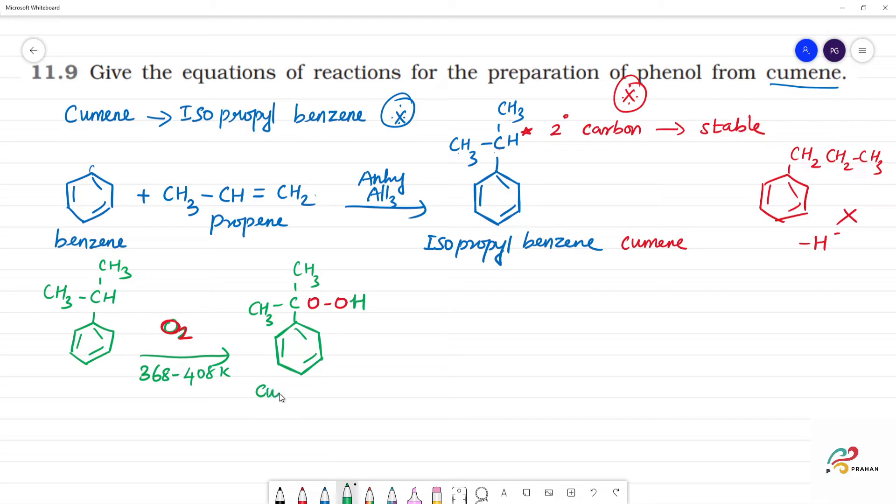What is this? Cumene hydroperoxide. Next, cumene hydroperoxide in presence of dilute acid, temperature maintained 323 to 363 Kelvin. We get CH3-CO-CH3.